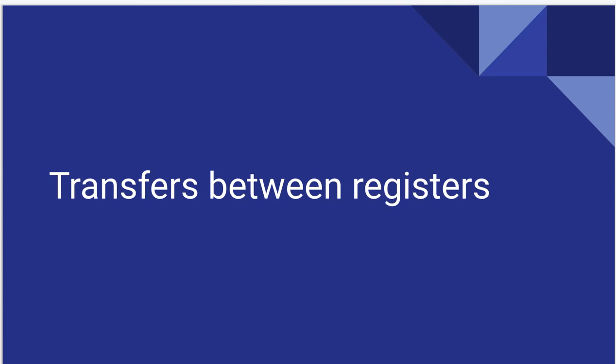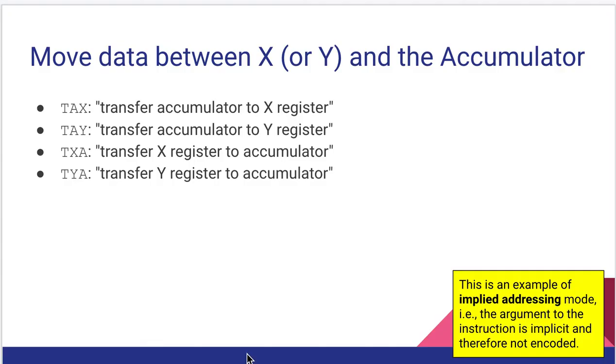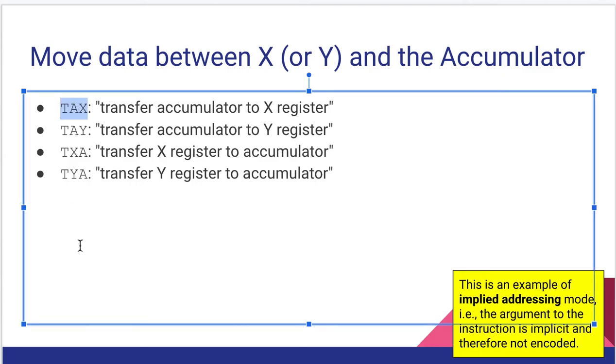All right. Well, not the last thing, but close to the last thing. We'll talk about some instructions that transfer between registers. And these are them very simply. Transfer from accumulator to the X register. Transfer from accumulator to Y. Transfer from X to A. Transfer from Y to the accumulator. And as the yellow box says, this is an example of implied addressing. None of these take an address. None of them take an implied or any kind of thing. The instruction is simply that and no more.